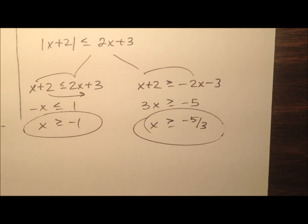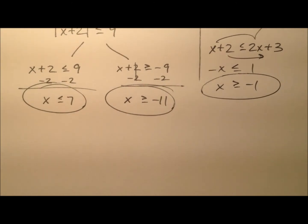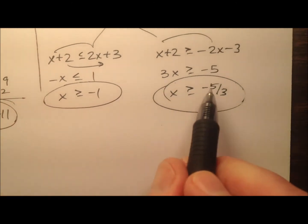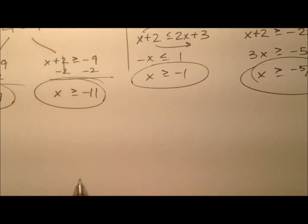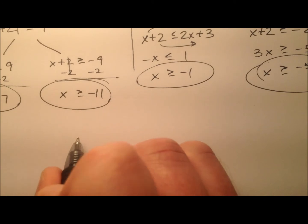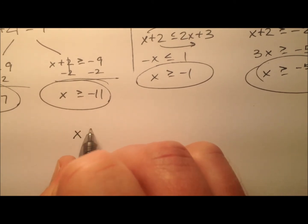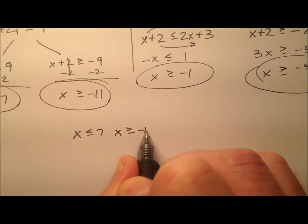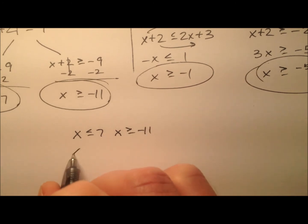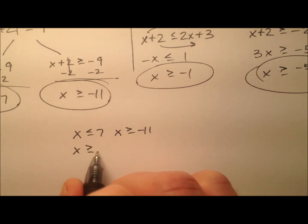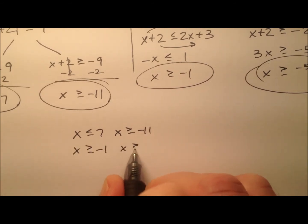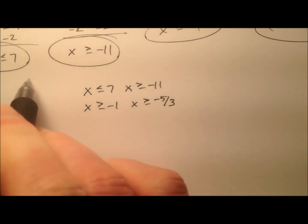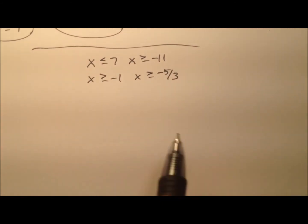So we have four simple inequalities now. Let's go ahead and write them all together: x is less than or equal to seven, x is greater than or equal to negative 11, x is greater than or equal to negative one, and x is greater than or equal to negative five thirds. So we have all four now.